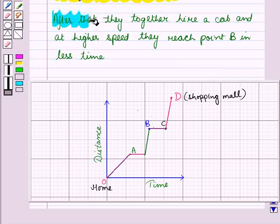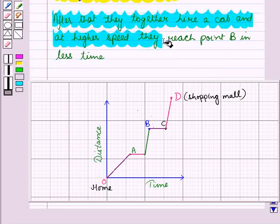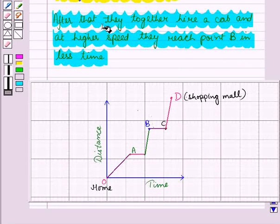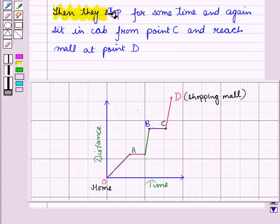After that, they together hire a cab. And at higher speed, they reach point B in less time. And then they stop for some time and again sit in cab from point C and reach mall at point D.